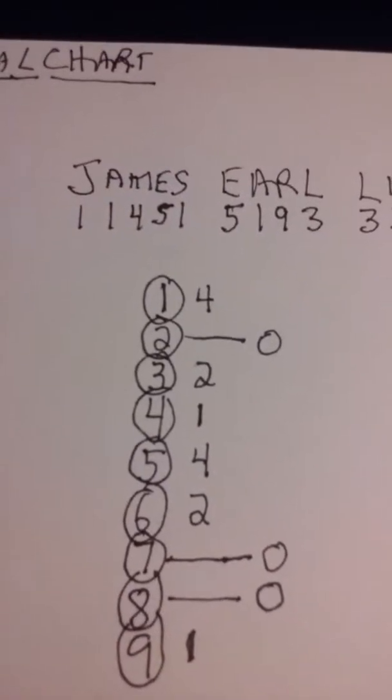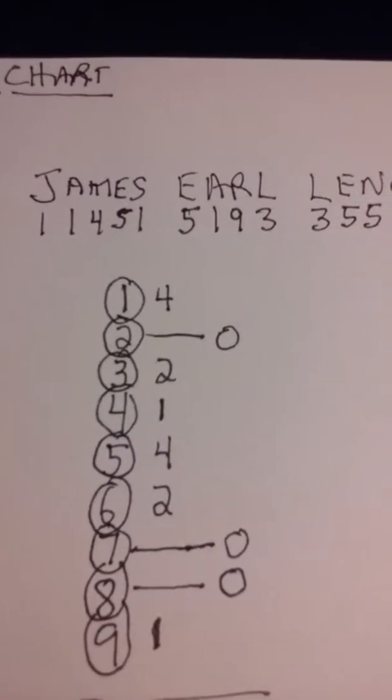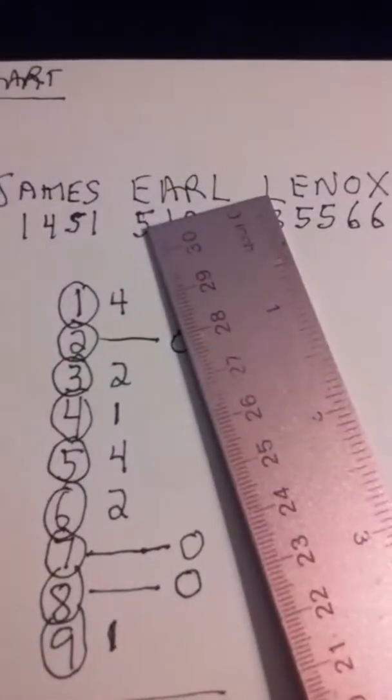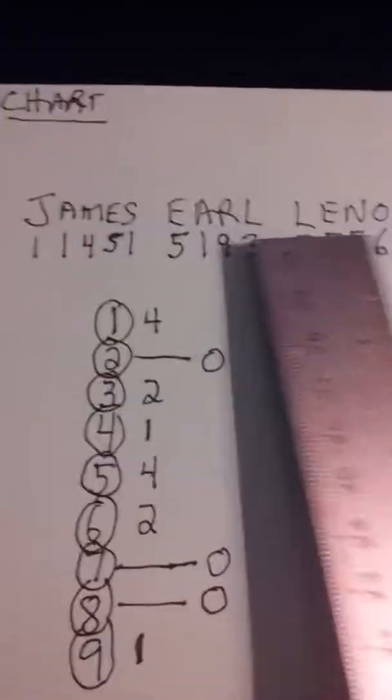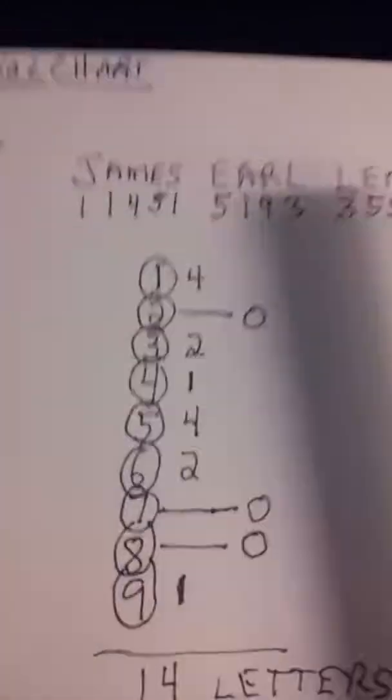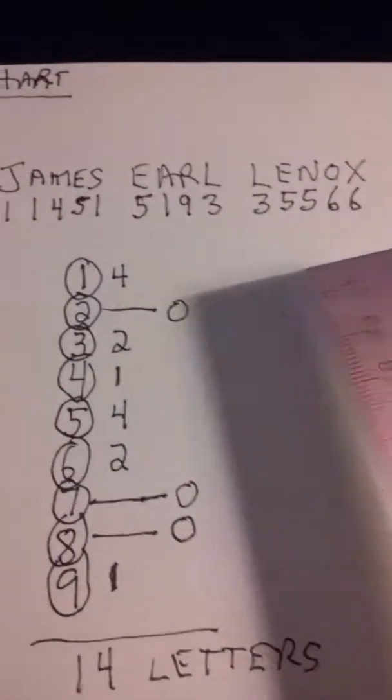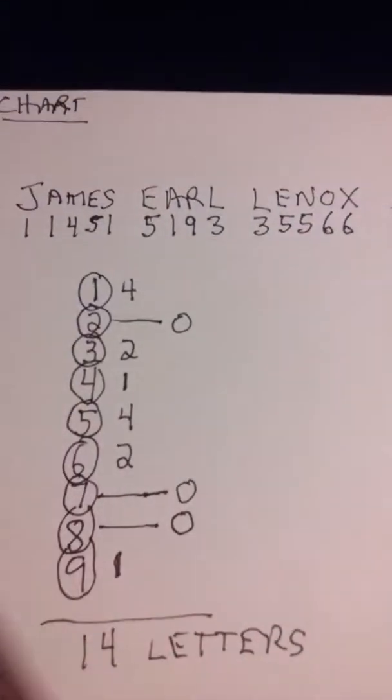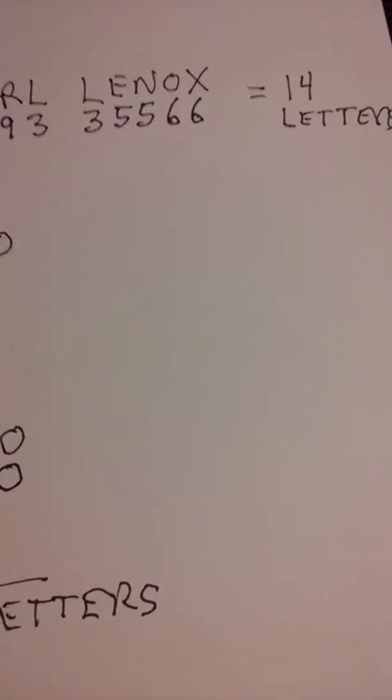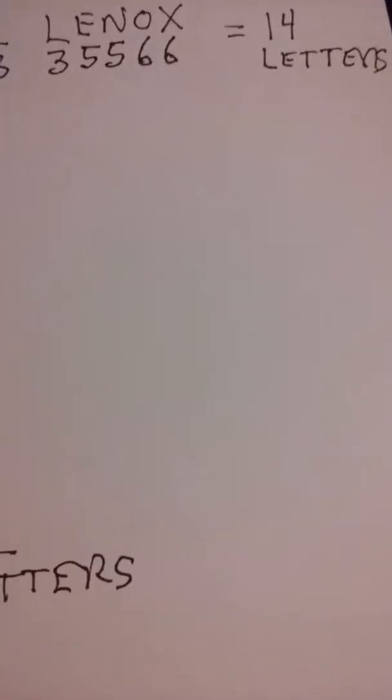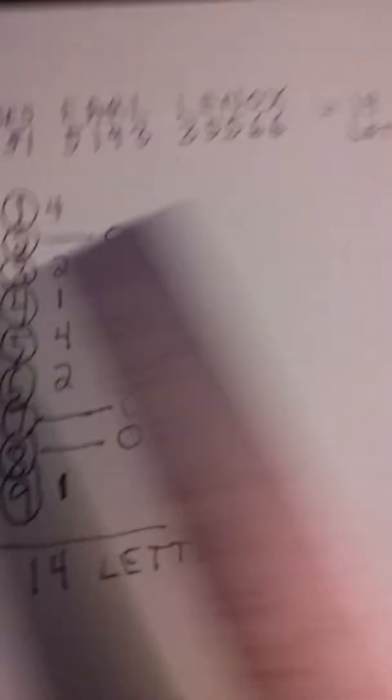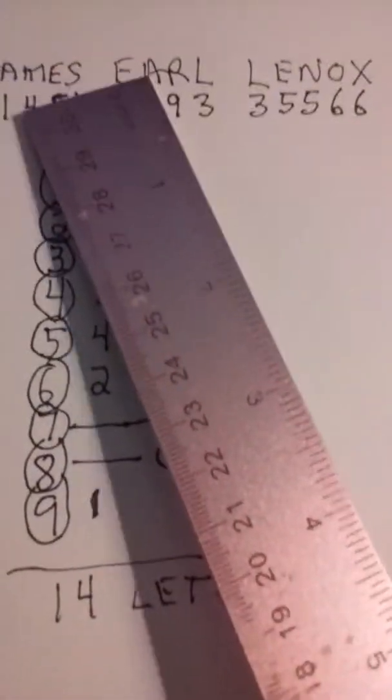We see if it has any CLUs, and that would be how many 3s it has. It has an L here for the name Earl, and an L for Lennox. So we know it has two 3s. Then we look, does it have any DMV? It has an M for James, so we put 1, 4. You see the M right up here? That's for James, right here.